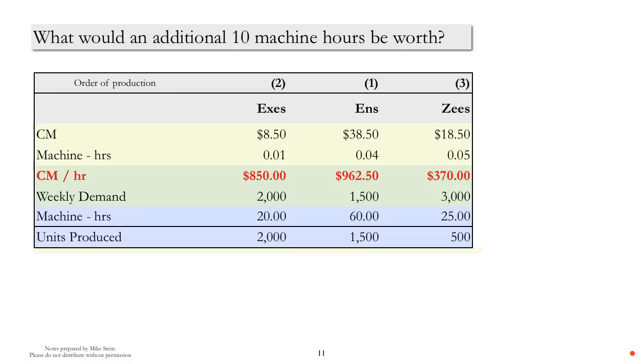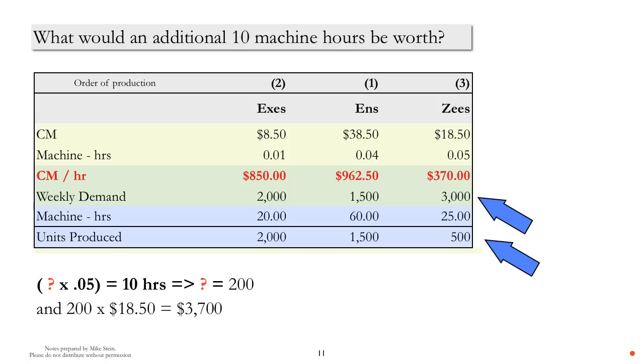An interesting question that we might consider is, what would an additional 10 machine hours be worth to Constant? In order to solve that problem, you have to ask, what would Constant do with the time? Well, the only product for which there is unfulfilled demand are Z's. And so it would take the 10 machine hours and start to manufacture Z's. How many Z's could it manufacture? Once again, the calculation is not too difficult. With 10 hours of time, they could manufacture 200 Z's. And since each Z provides $18.50 in contribution margin, the 10 additional machine hours would be worth $3,700 in additional contribution margin.